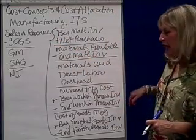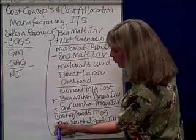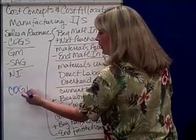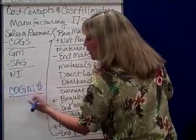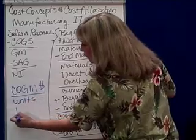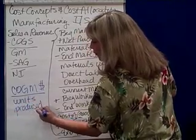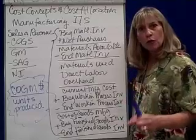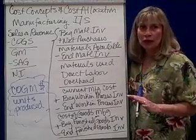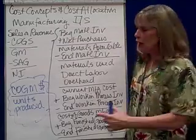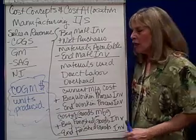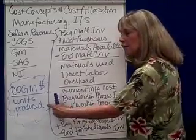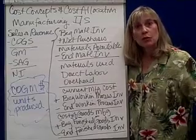One other thing to understand: cost of goods manufactured — I'll abbreviate it COGM — in dollars divided by the units produced will give you your cost per unit. In these chapters we spend a lot of time asking how much does the product cost. Now you know: the cost of goods manufactured, what came out of the production process in dollars, divided by the number of units produced — that's the unit cost.